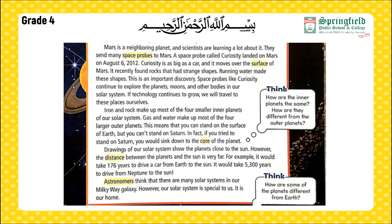This is an important discovery. Space probes like Curiosity continue to explore the planets, moons, and other bodies in our solar system. If technology continues to grow, we will travel to these places ourselves. Iron and rock make up most of the four smaller inner planets of our solar system. Gas and water make up most of the four larger outer planets.